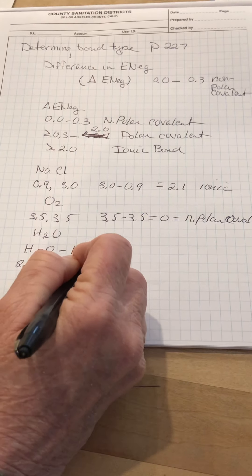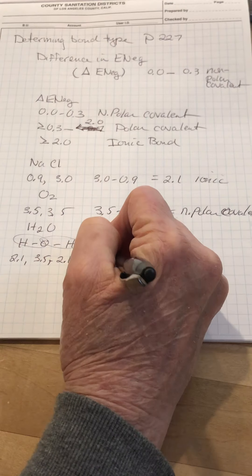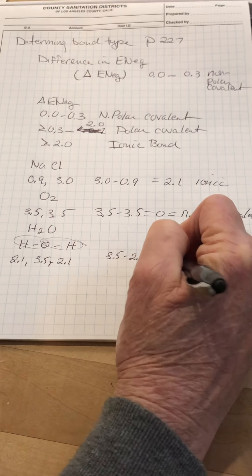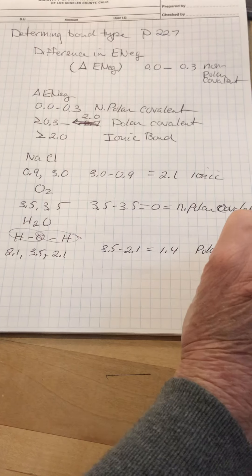You are concerned about the electronegativity of this bond or of this bond. You're not going to add them up. So it's 3.5 minus 2.1 gives you 1.4. These bonds are polar covalent.